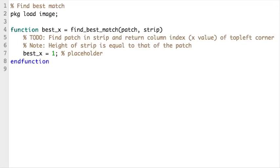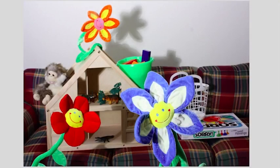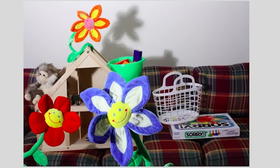Let's try to do this in code. I want you to write a function find_best_match that takes two arguments, an image patch, and a strip, which is basically the same height as the patch, but has a width equal to that of the image. Your function should return the x coordinate where the patch is found in the strip. Here is some test code. Let's load up two images from a stereo pair, left and right. This is the left image, and here's the right one.